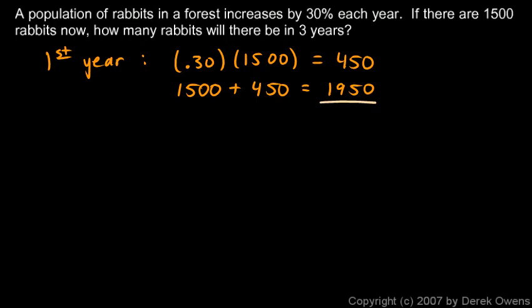Now the end of the first year is the beginning of the second year, so let's go on to the second year and do the calculation here. The second year, the population increases by 30% again, but now it's 30% of this, 30% of the new population here. So I'm going to calculate 0.30 times 1950, and when I do that, that comes out to be 585.